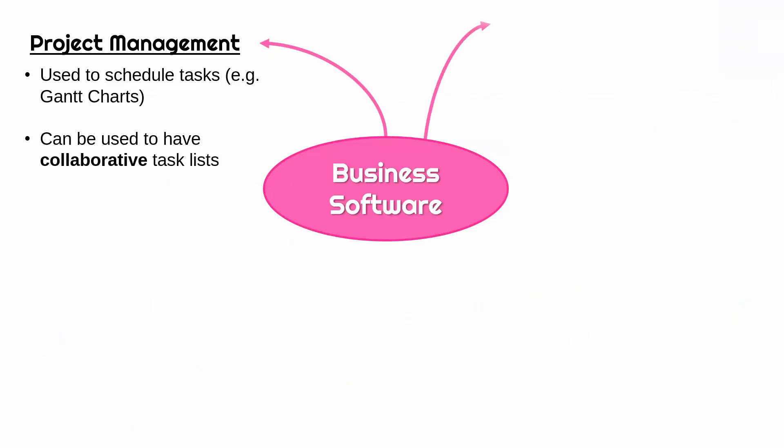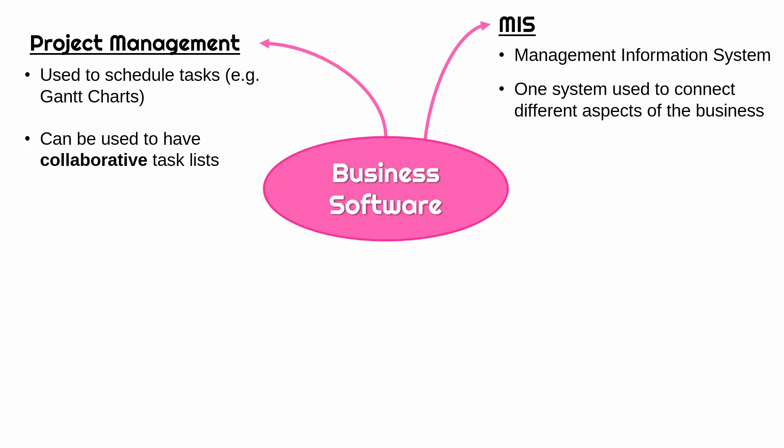Another example of business software is MISs. An MIS is a Management Information System, which is quite a vague name deliberately, because it's very specific to what the company is doing. What an MIS is, is one system which connects different aspects of the business — one programme which links together all of your major operations.